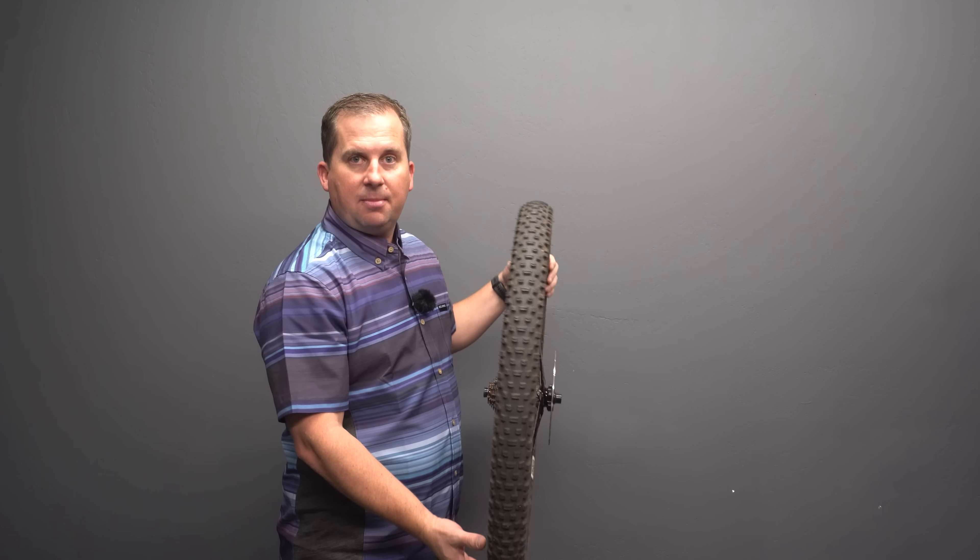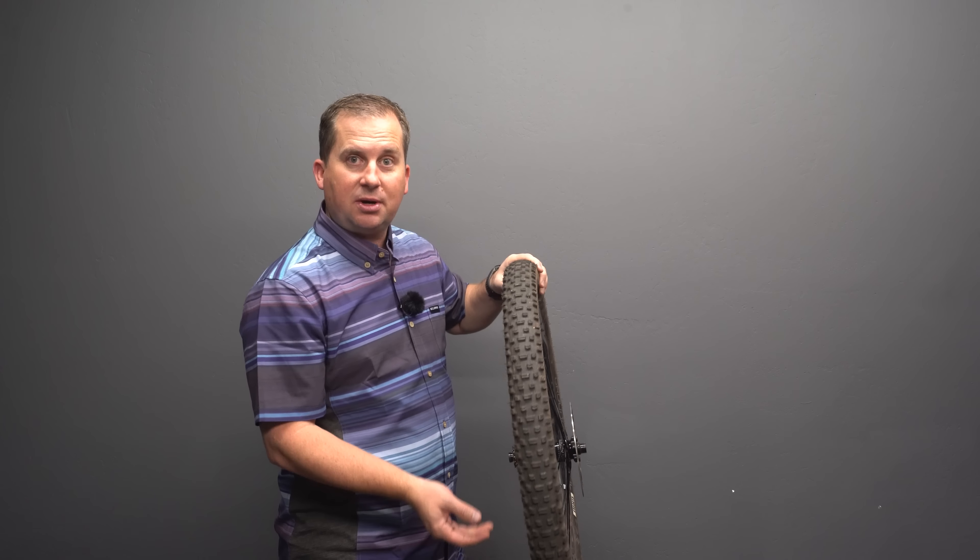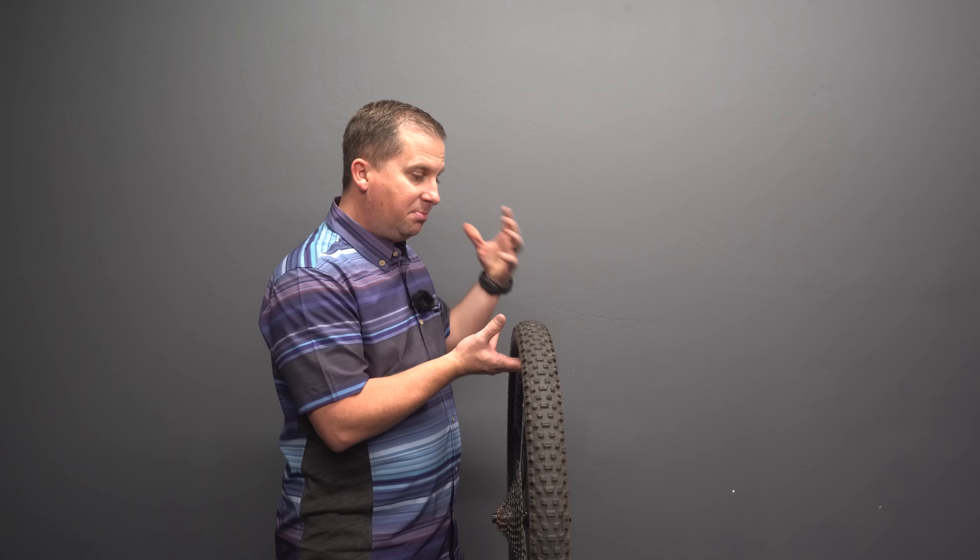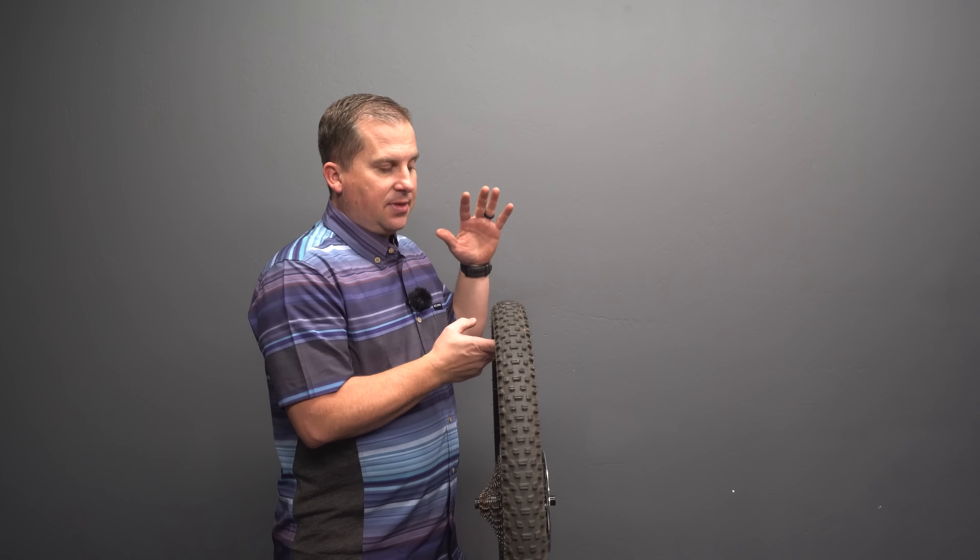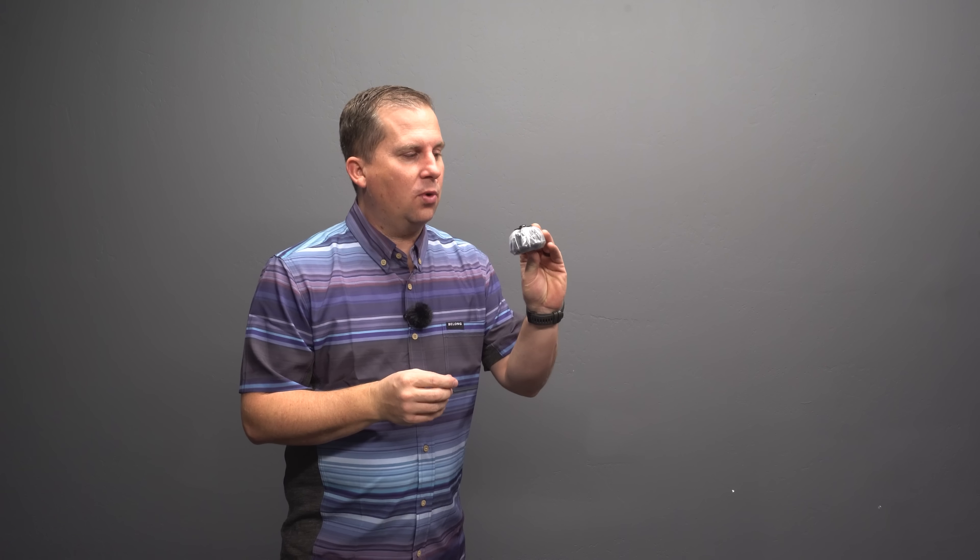I run it in a 29 by 2.3 on most of my bikes or 29 by 2.6 when I'm running 2.6 big tires on big rims. They roll fast, they grip really well, and they climb really well.